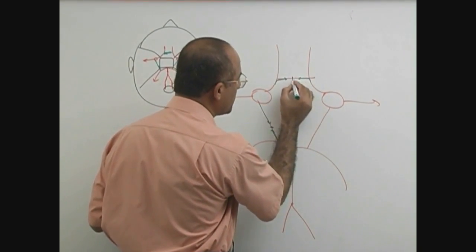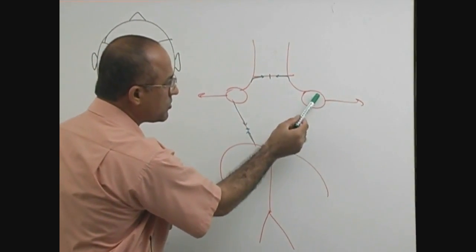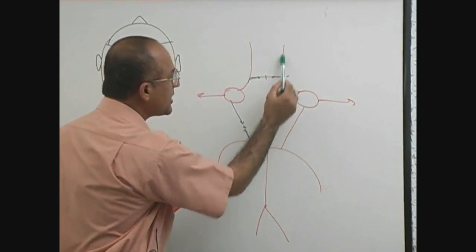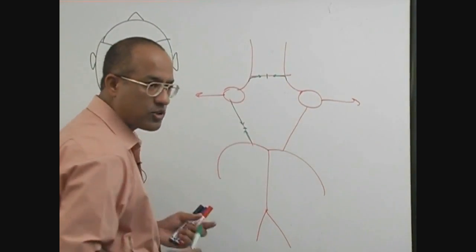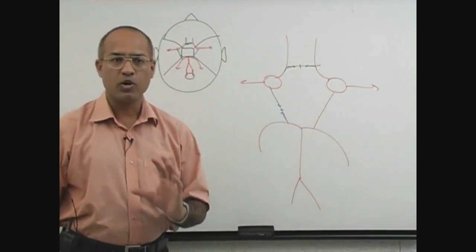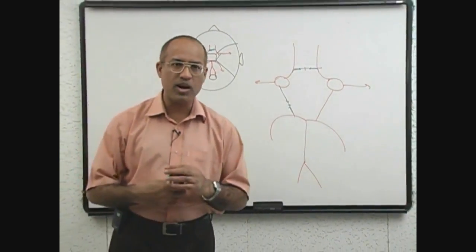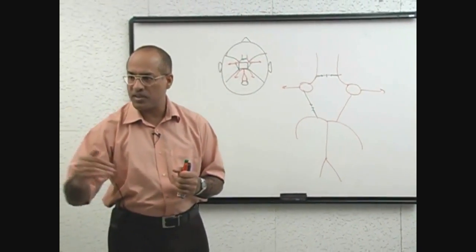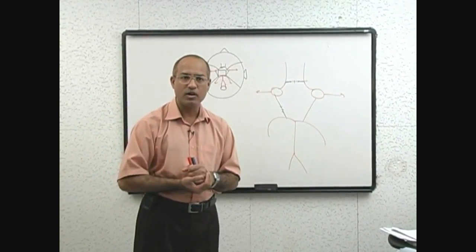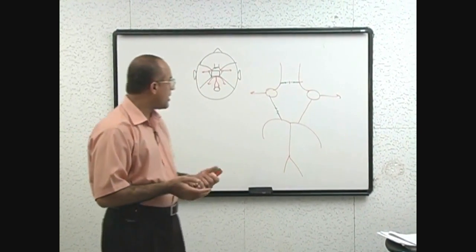In the same way, blood from the left carotid system and right carotid system meet over here via the anterior communicating artery. If blood supply on one side is less, blood can move from the other side to compensate. So the advantage of the circle of Willis is that it is a unique collateral supply system.